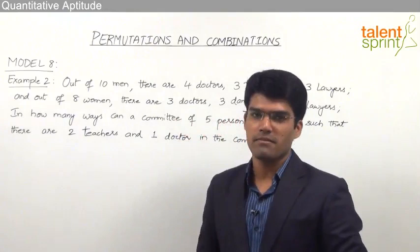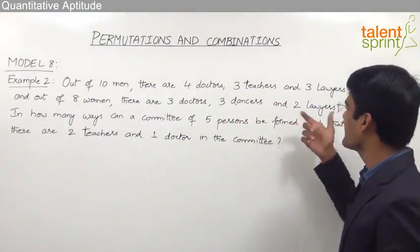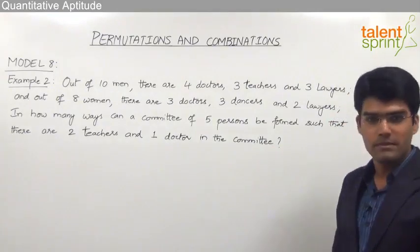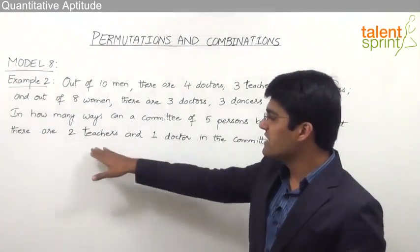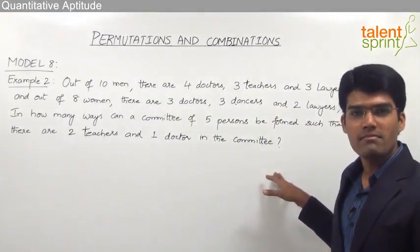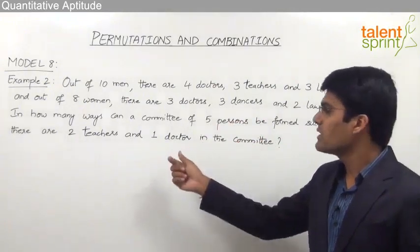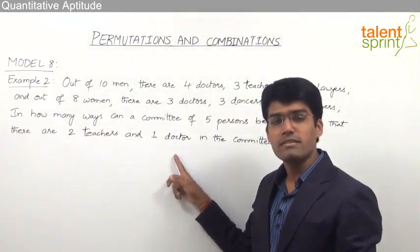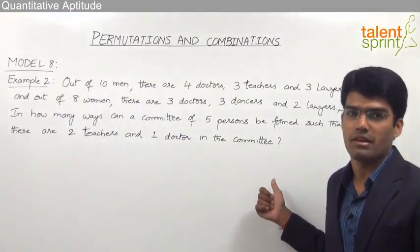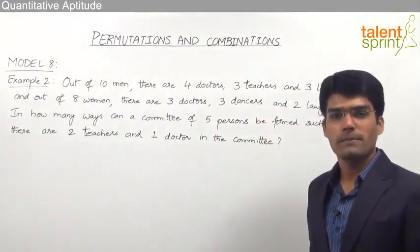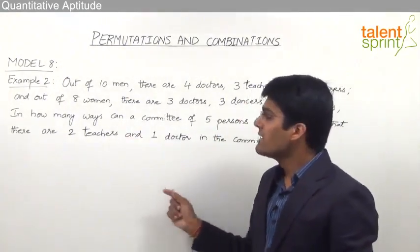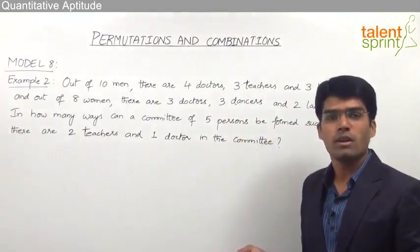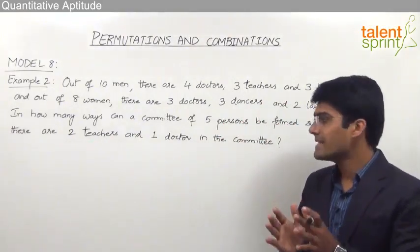Let us now take the second example from model 8. Out of 10 men there are 4 doctors, 3 teachers and 3 lawyers, and out of 8 women there are 3 doctors, 3 dancers and 2 lawyers. In how many ways can a committee of 5 persons be formed such that there are exactly 2 teachers and 1 doctor? Understand that there can be only 2 teachers and only 1 doctor — not more — and the remaining 2 persons can be of any other profession.